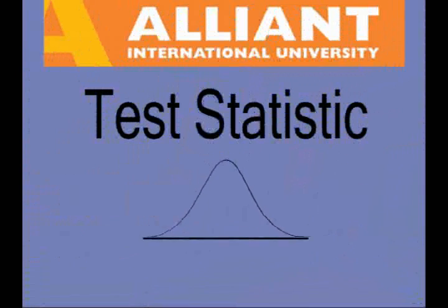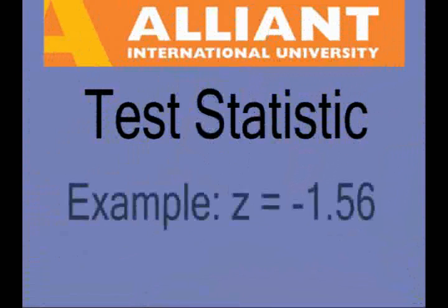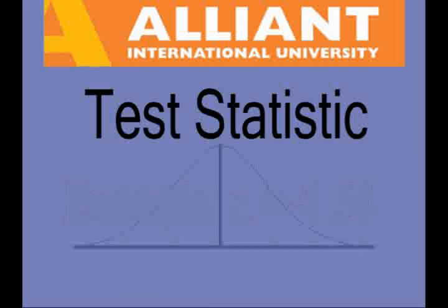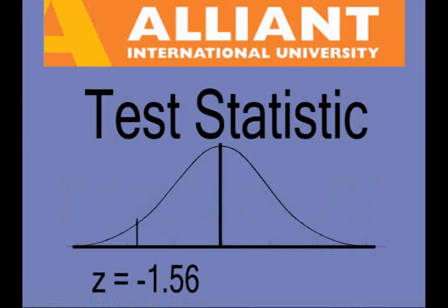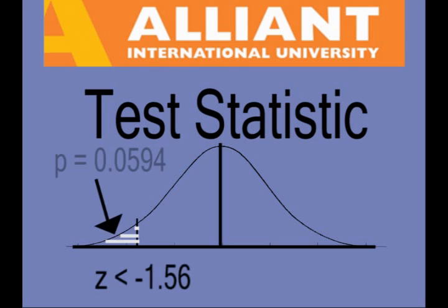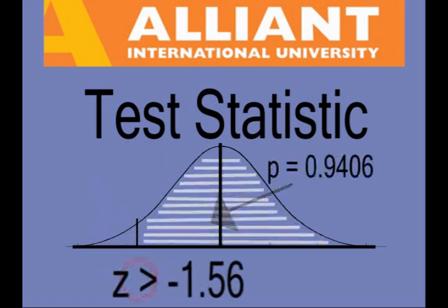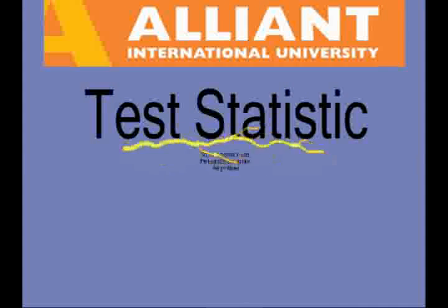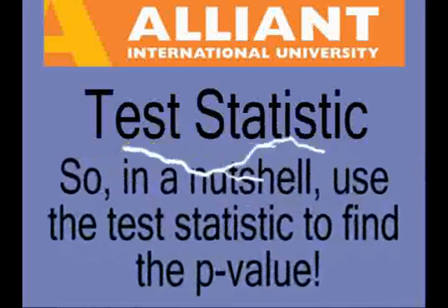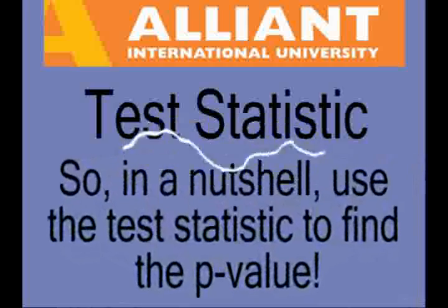An example: z equals negative 1.56. There it is on the curve. So the probability of less than that is a very small number. The probability of greater than — remember, you subtract that from one — that's a much larger number. So in a nutshell, you use the test statistic to find the p-value.